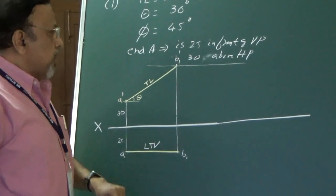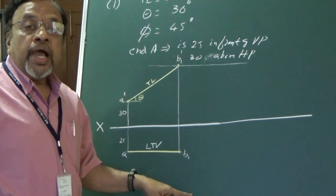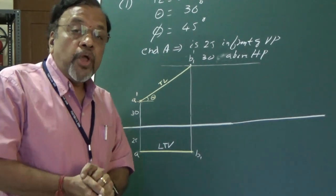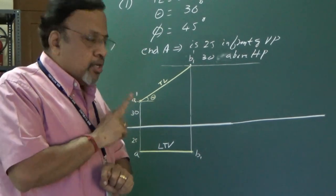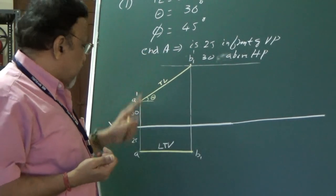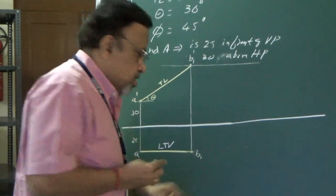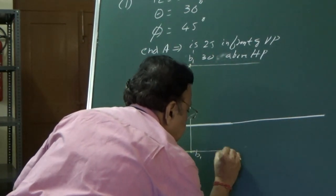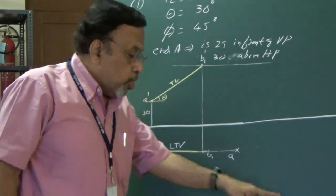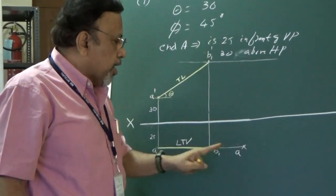In Stage 2, I consider the line inclined to VP and parallel to HP. Since it is parallel to HP, I see the true length in the top view, so I start from the top view. End A is already known at 25 mm in front of VP. I know the true length is 80 mm and inclination to VP is phi equal to 45 degrees. I draw the true length line at 45 degrees — this is TL — and extend the locus line from A.